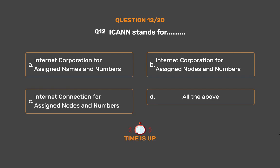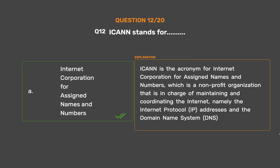The correct answer is Option A: Internet Corporation for Assigned Names and Numbers. ICANN is a non-profit organization in charge of maintaining and coordinating the Internet, namely the Internet Protocol (IP) addresses and the Domain Name System (DNS).